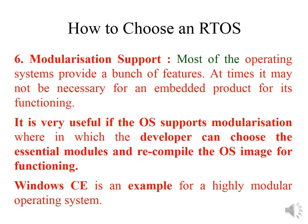The sixth functional requirement is modularization support. The OS may provide many features, but our embedded system may require only a few. If the OS supports modularization, the developer can select only the essential modules and recompile the OS image, reducing its size. Since embedded systems have limited memory, reducing the OS image size is very important. Windows CE is an example of a highly modular operating system.